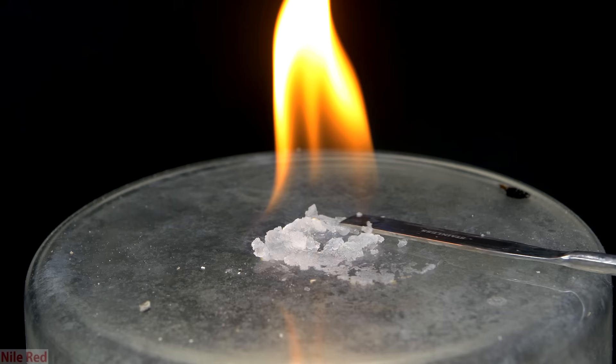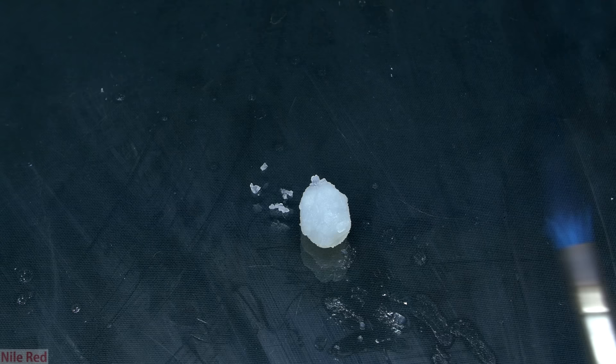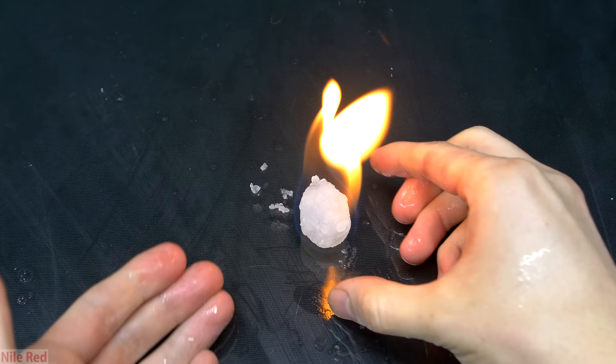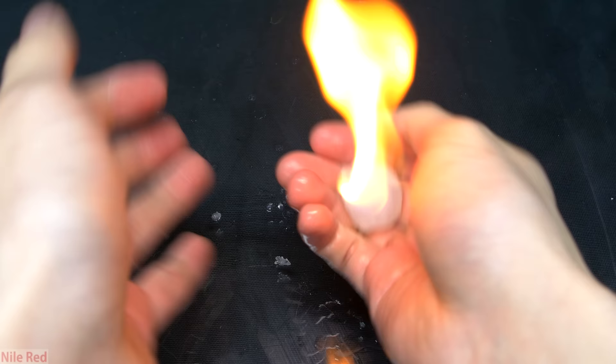This semi-solid gel is actually sold commercially as something called Sterno, and it comes in little containers that can be used in portable stoves. You're more than welcome to make this semi-solid fuel to do things like cooking, but I'm honestly more interested in making it just to play with it.